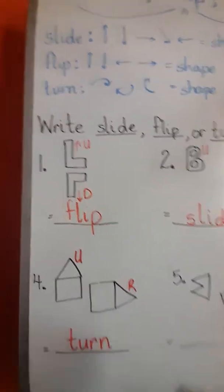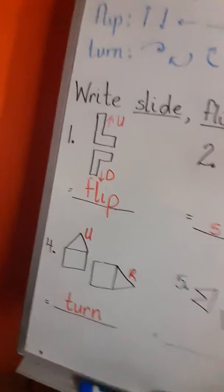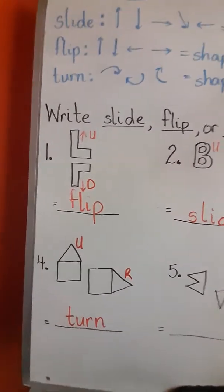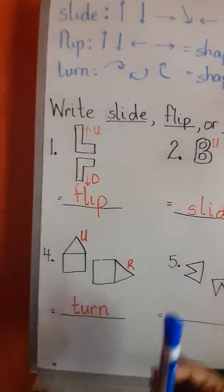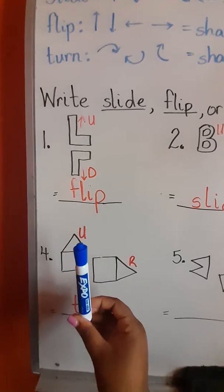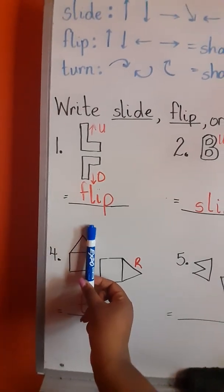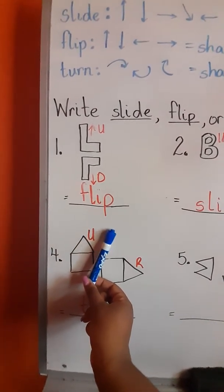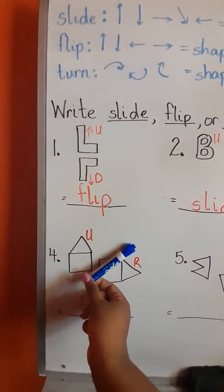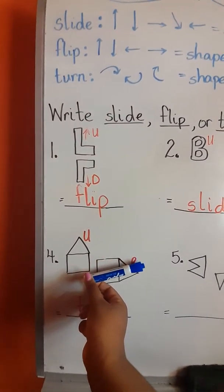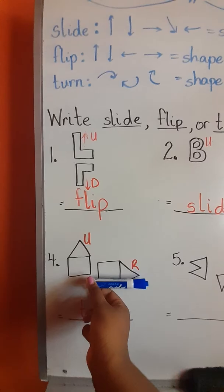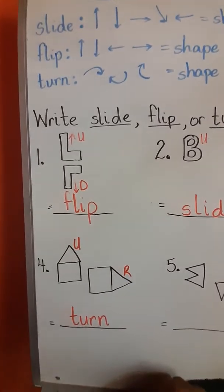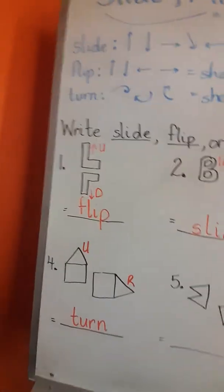I want to use one of my markers just to demonstrate turn. Sometimes turn is a little bit confusing. Let's just say my marker is the house. It was standing, and then the top of the house faced this way. Look at how my marker is turning. See? It turned. And that's exactly what happened to the house. It turned.